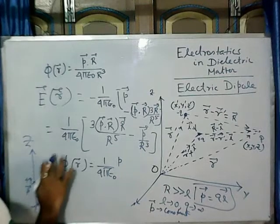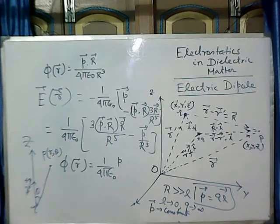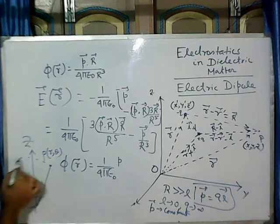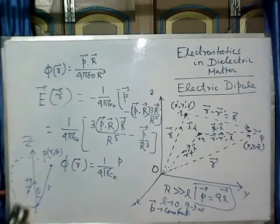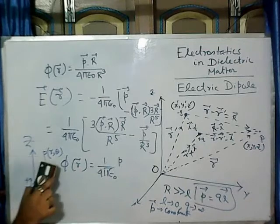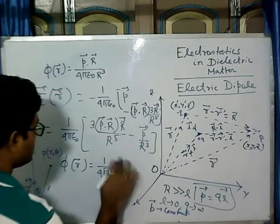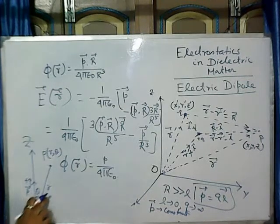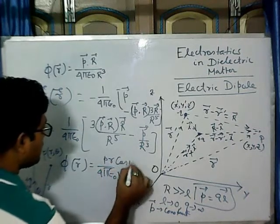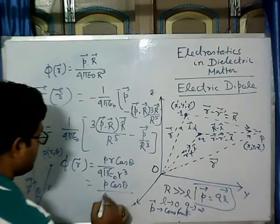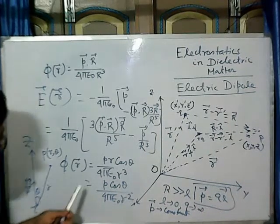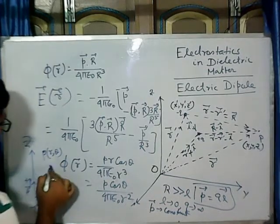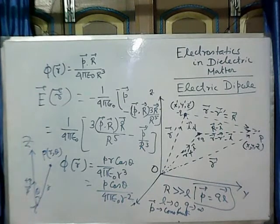It will be easy if we consider spherical polar coordinates, because we can consider this as a sphere of radius R. So this will be P dot R, and P dot R equals P R cos theta. So the form becomes phi equals P cos theta by 4π epsilon naught R squared. This is the form of potential at point P when we are considering the dipole is along the Z axis.